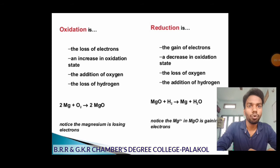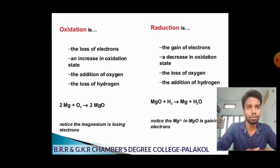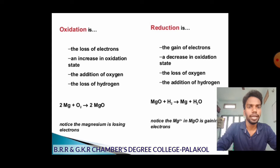Looking at this slide on oxidation and reduction: oxidation is loss of electrons, which increases the oxidation state, and involves addition of oxygen or loss of hydrogen. Reduction is gain of electrons, which decreases the oxidation state, and involves loss of oxygen or addition of hydrogen.